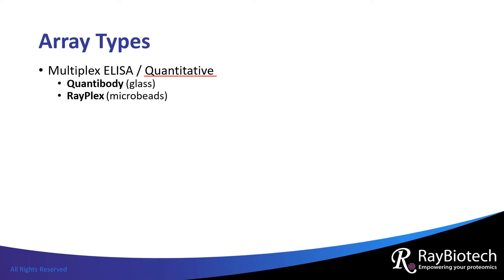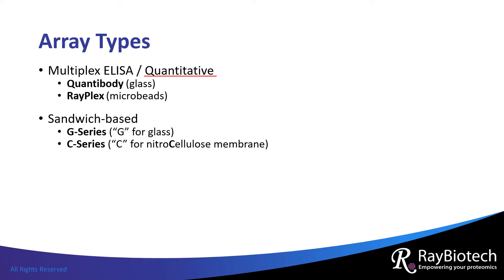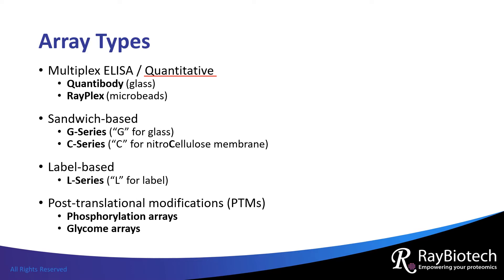Relative fold changes of protein expression levels can be determined with all of our other arrays. Our sandwich-based antibody arrays include G series and C series. Our label-based antibody array is L series. Finally, we have phosphorylation arrays and glycom arrays for studying post-translational modifications.